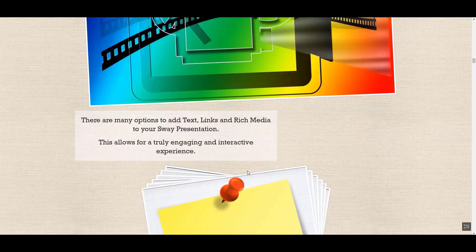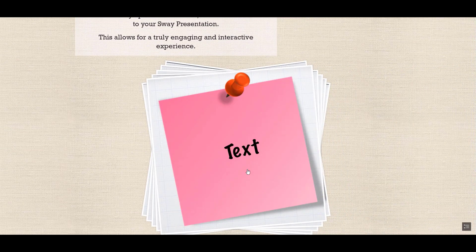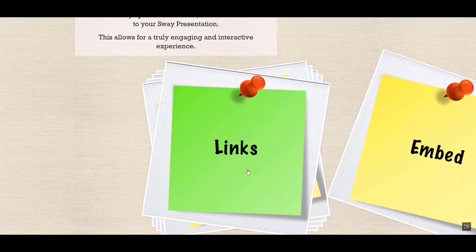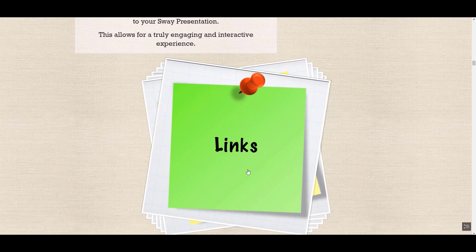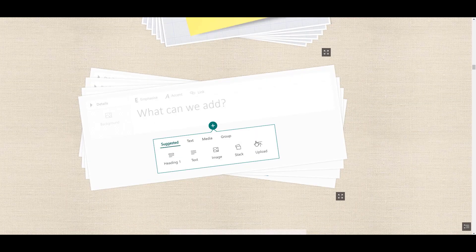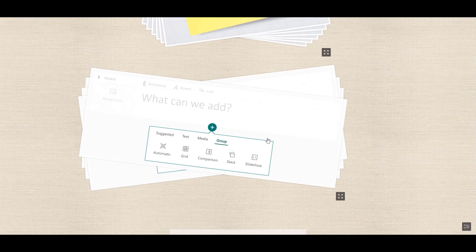Sway supports all kinds of rich media, so you can use it for adding headings to your presentation, text, images, video, and you can also embed content. You can also add links so all the information is in the one place. When populating your Sway, you add different cards by clicking on the plus button. The different cards allow you to add all kinds of different media.